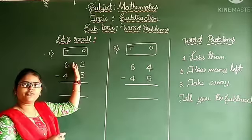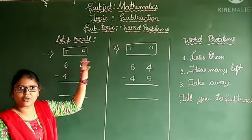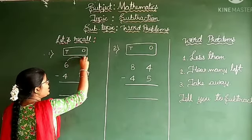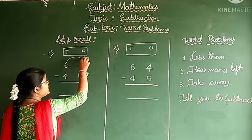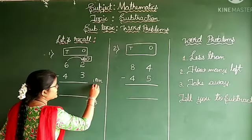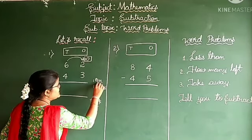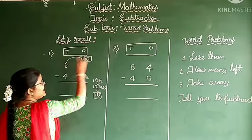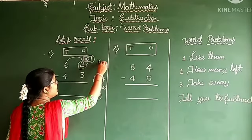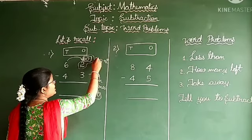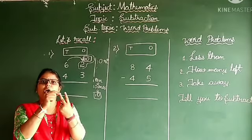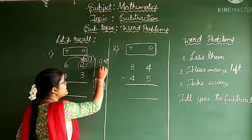If this kind of problem cannot be solved, then we have to take a borrow from the 10s place. How much borrow? 10 ones, or 1 ten. 1 ten means 10 ones. So we write it as 10. Then you add these two numbers: 10 plus 2. Keep 10 in your mind and 2 on your fingers — 11, 12. Therefore 12 is the sum.